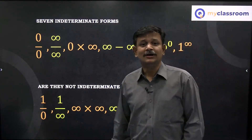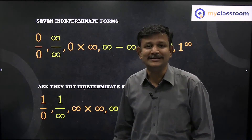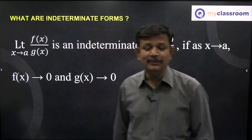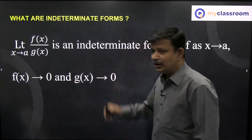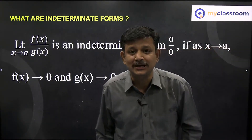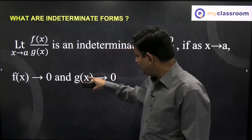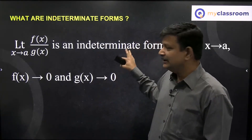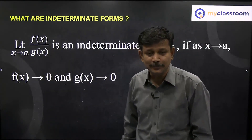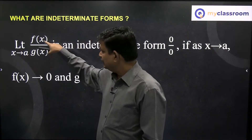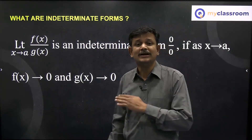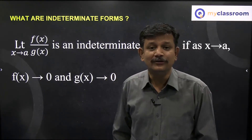To answer these questions, first and foremost you need to know what an indeterminate form is. If you have a limit as x approaches a of f(x) by g(x), this is called an indeterminate form 0 by 0 if, as x approaches a, f(x) tends to 0 and g(x) tends to 0 — both numerator and denominator approaching 0.